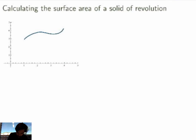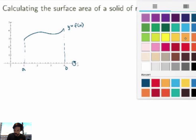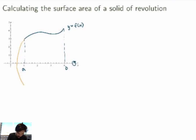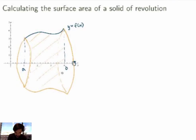Suppose I have a curve y equals f(x) and I look at the curve between two points x equals a and x equals b. Now let me consider the case where I'm rotating this curve about the x-axis to get some solid of revolution. Suppose I'm not interested in calculating the volume of the solid but rather the surface area — the area of the surface all around the solid. How can I do that?